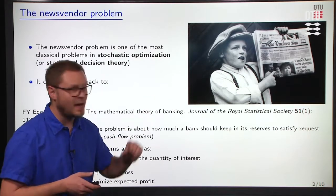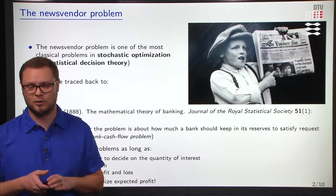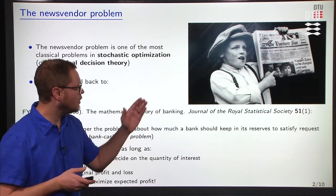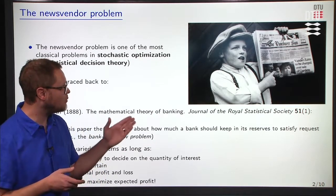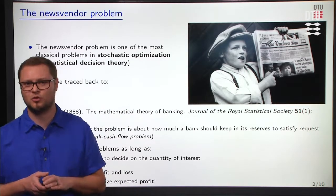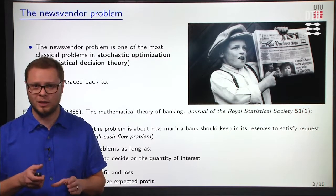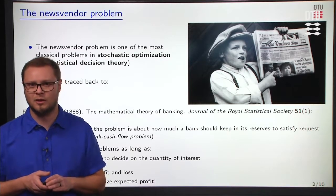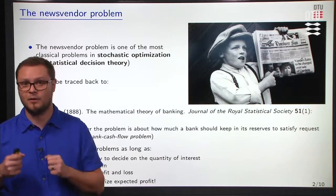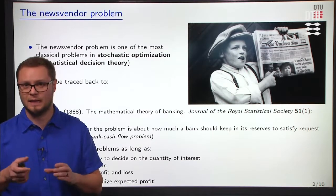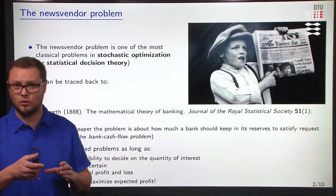But let's focus back on the newsvendor that gave his name to the problem we're going to be discussing. You may have already seen this kind of picture from old movies. It's the picture of a small boy selling newspapers in the streets of, say, New York. This small boy is the newsvendor. In the morning, he's going to a warehouse, buying a lot of newspapers, a big block of newspapers, bringing them to the street and selling them one by one to people passing by.